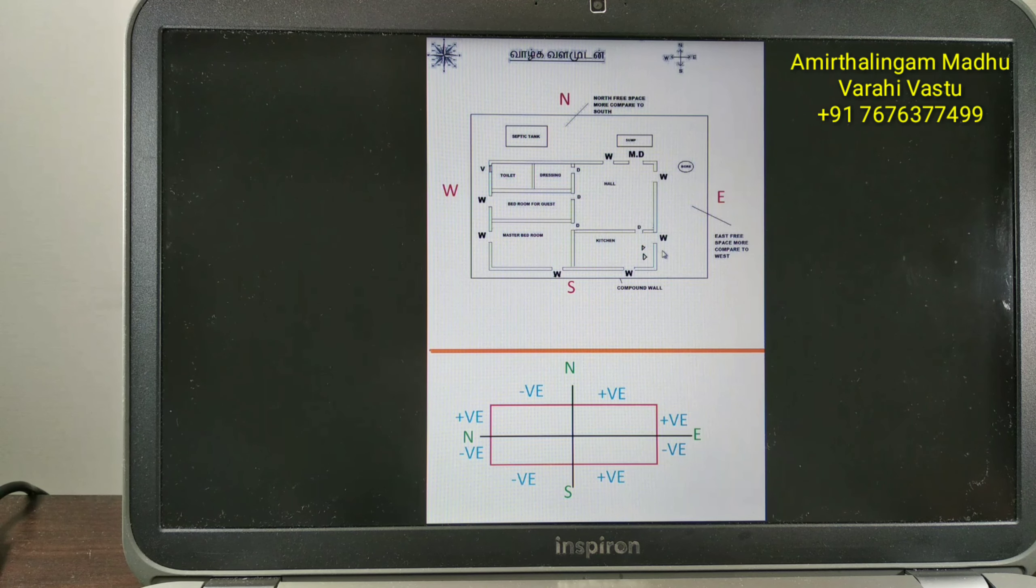For example, I will take a kitchen. So kitchen, if you divide half, what will happen? So if it is east side, towards north is the positive. So positive side, you can place window. Negative side, it should not come. Same like this drawing. If it is south side, towards east is the positive side. You can place the window. So you can apply for all the rooms in the house.